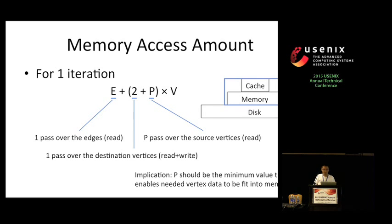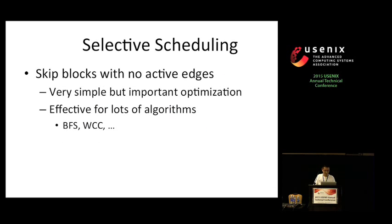But is this really the right value we should use for P? Before further discussion on the selections of P, let's first see another usage of our grid representation. We implement selective scheduling in GridGraph to skip edge blocks with no active edges. This is a very simple but important optimization and can be used for lots of algorithms like BFS, WCC, and many others.